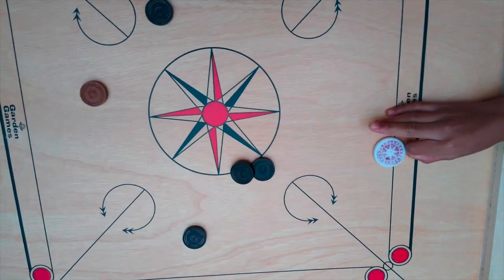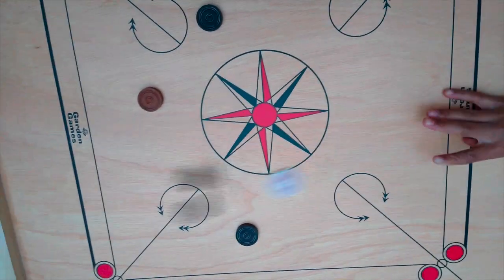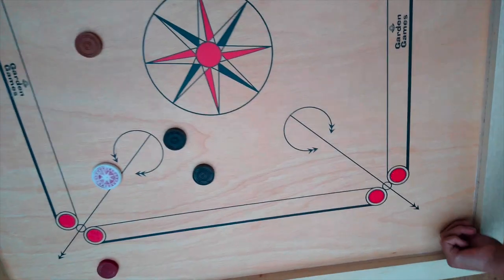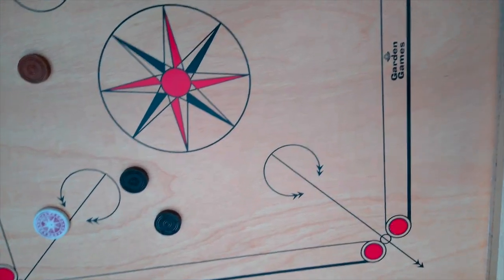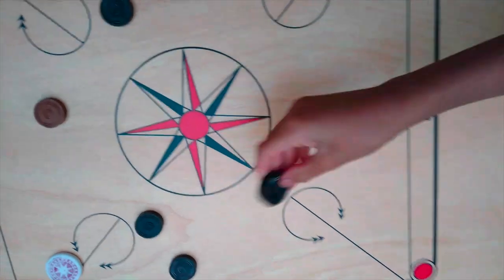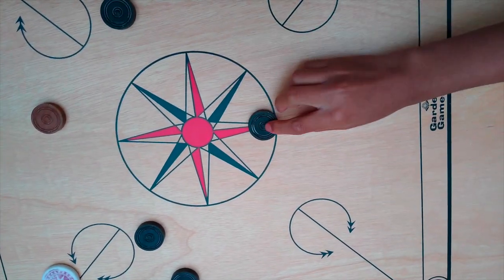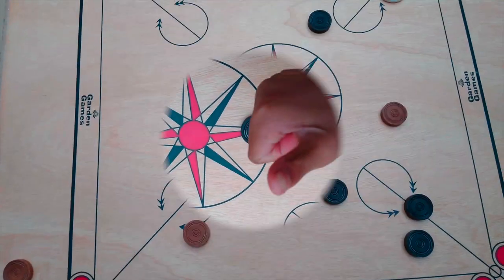When you're striking and one carrom man jumps off the board, you have to place the same color carrom man into the middle circle.